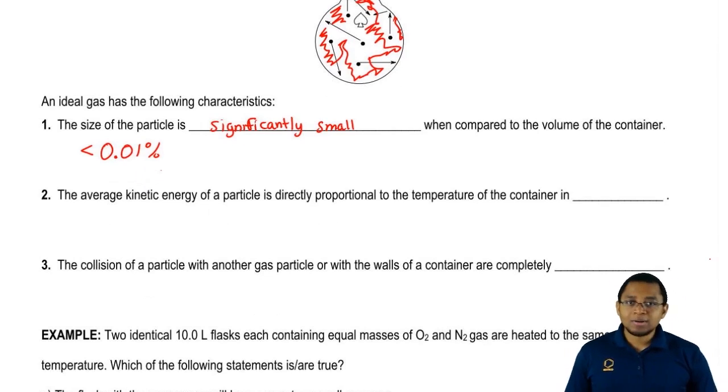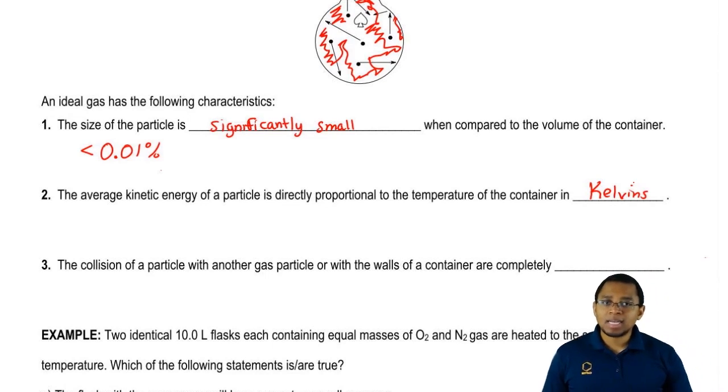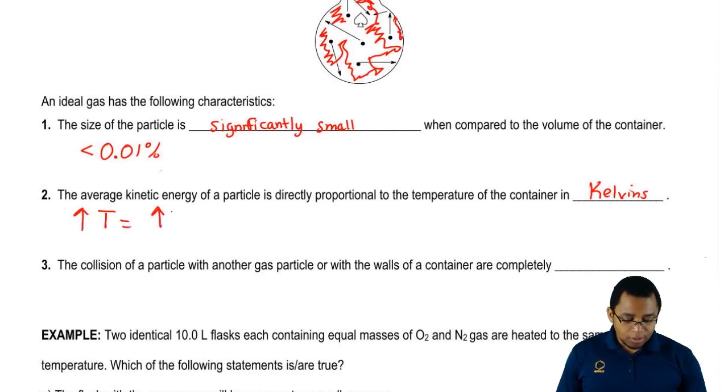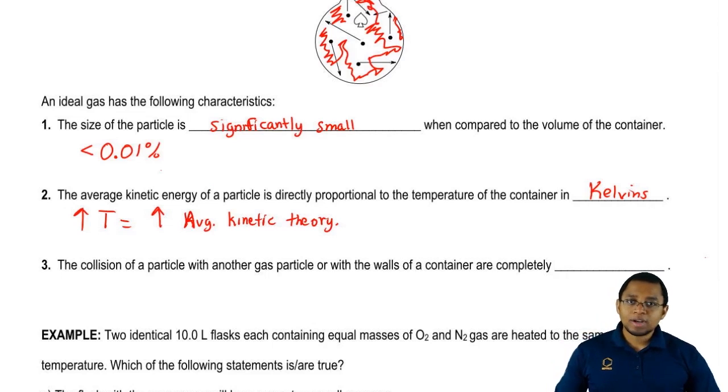The next thing to be an ideal gas, we're going to say the average kinetic energy of a particle is directly proportional to the temperature of the container in Kelvins. What does that mean? Well, that means an ideal gas, when we increase the temperature, that increases the average kinetic energy of that gas. We increase the temperature to a container, the gases absorb that thermal energy and convert it to kinetic energy. They have greater kinetic energy.